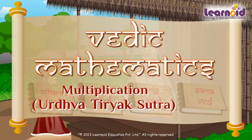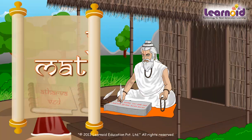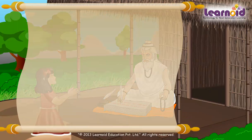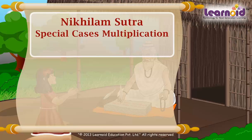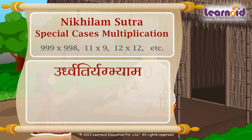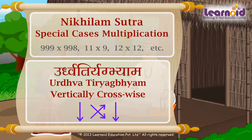Multiplication using the Urdhva Triyak Sutra. As we have seen, Nikhilam Sutra can be used to do special cases of multiplication. Today I will give you a general formula applicable to all cases of multiplication. It is Urdhva Triyak Abhyam, which means vertically and crosswise. Let's understand the Sutra by an example.